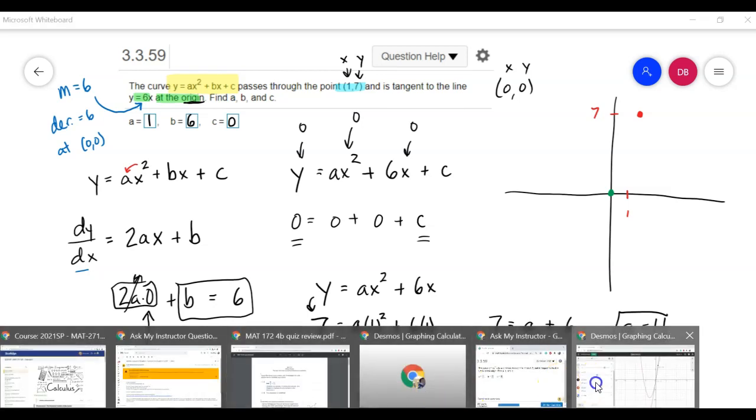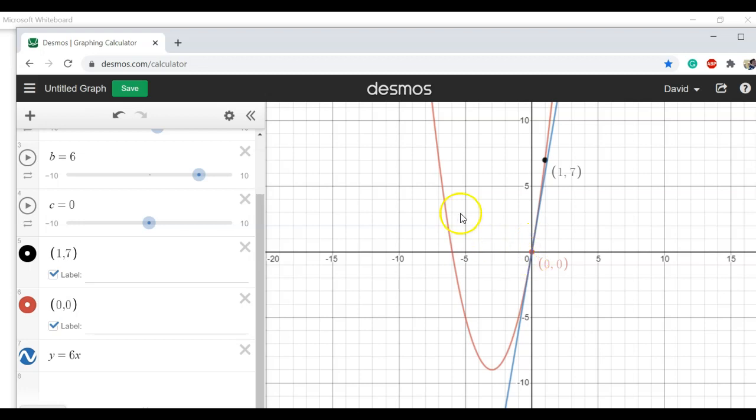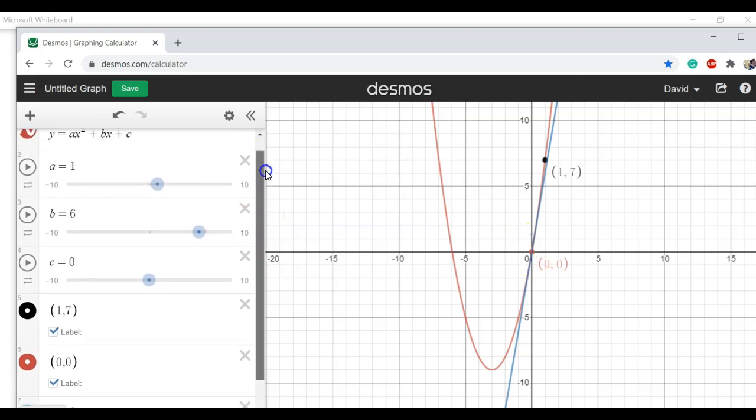But visually, that's what we just did. Of all the different values that a, b, and c can take on, the only ones that make it work with those two points and having to have that derivative are 6 for b and 1 for a, and 0 for c.